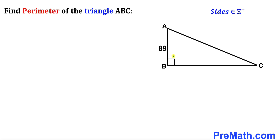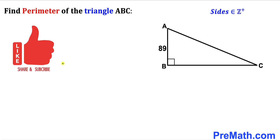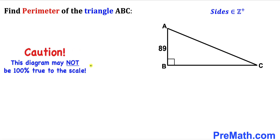Welcome to PreMath. In this video we have been given a right triangle ABC whose only one side length AB is given to us as 89 units, and our task is to calculate the perimeter of this right triangle ABC. Please don't forget to give a thumbs up and subscribe. Keep in mind that this figure may not be 100% true to the scale.